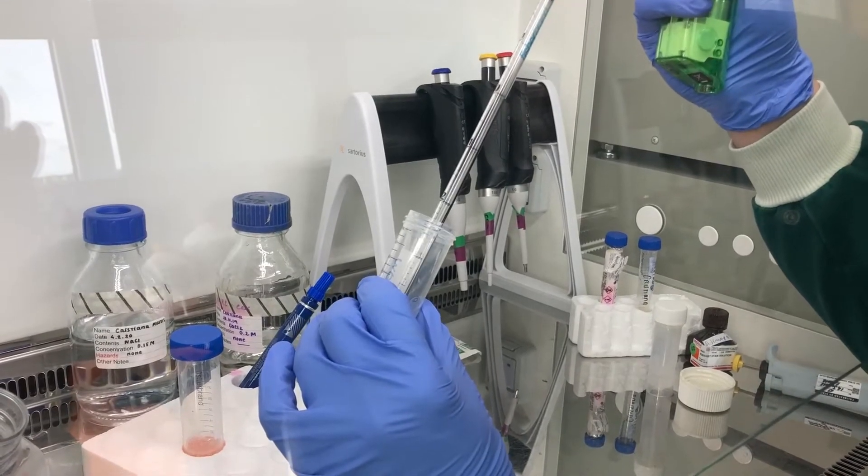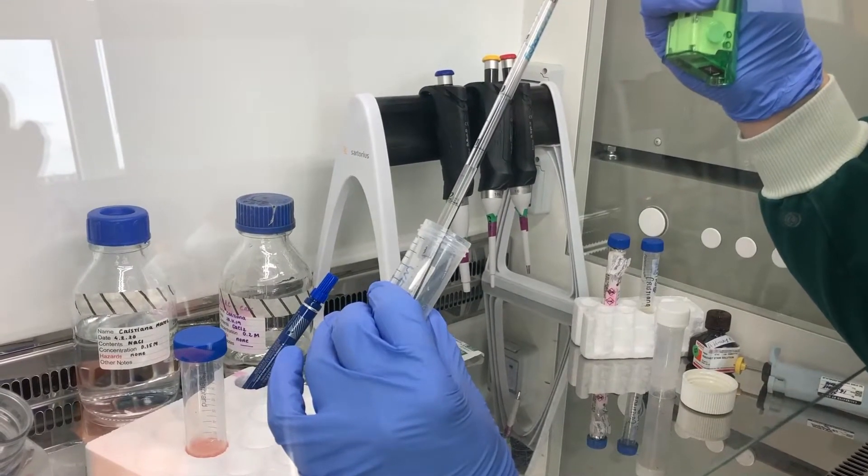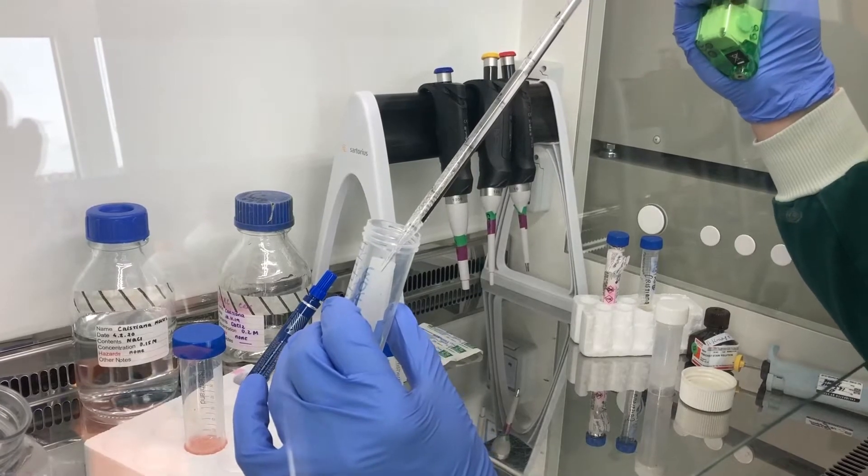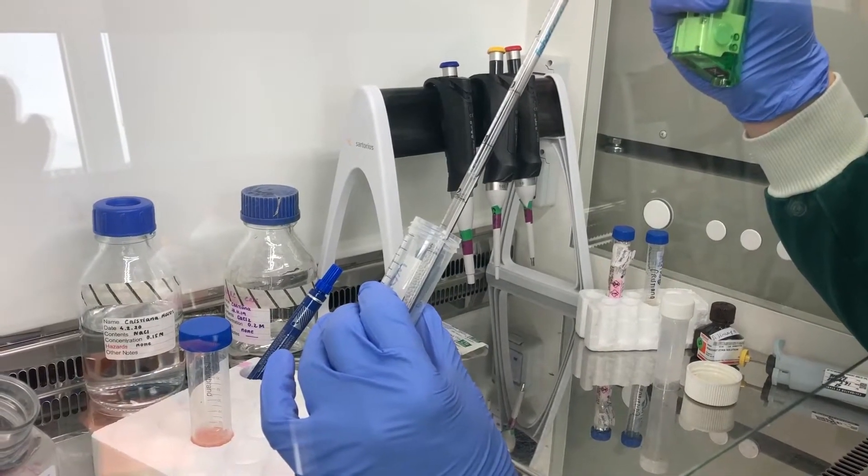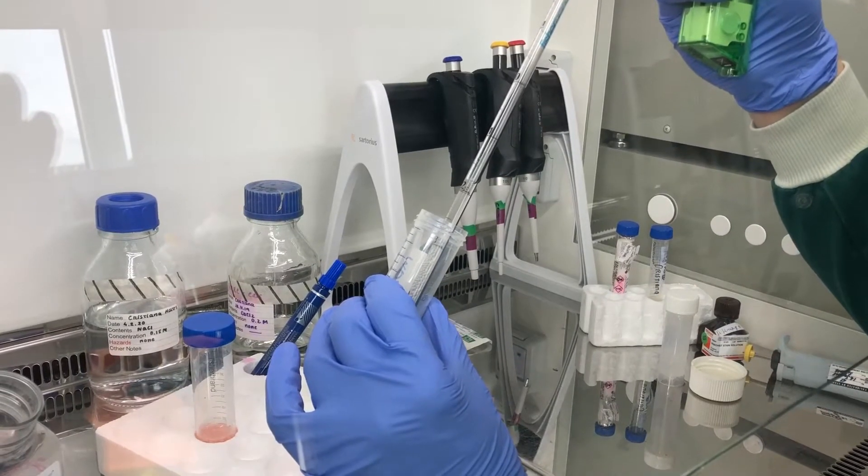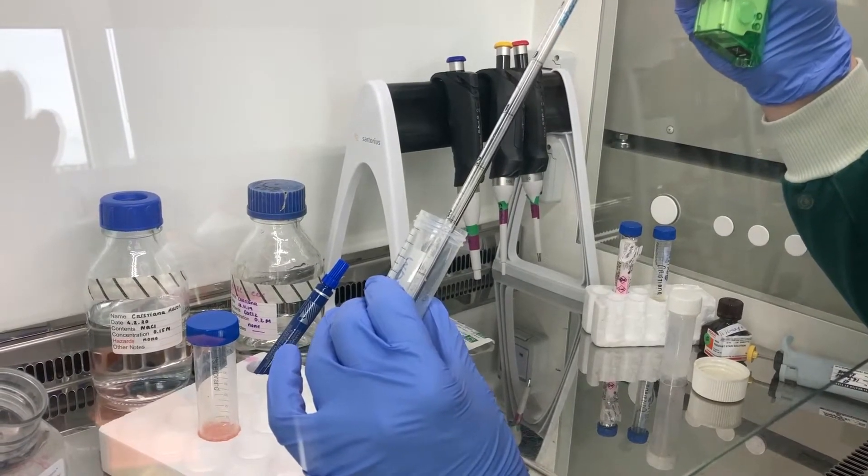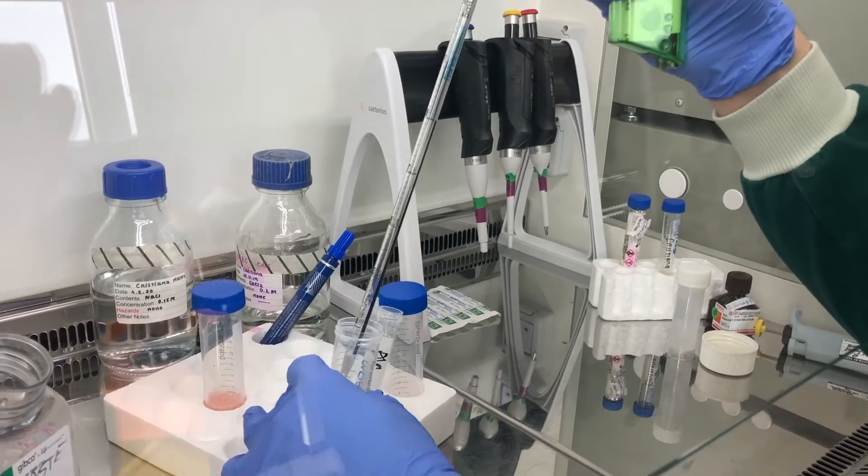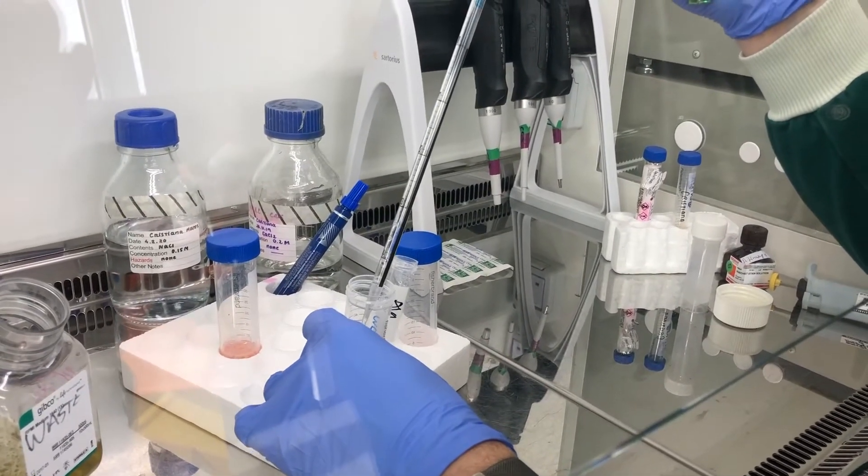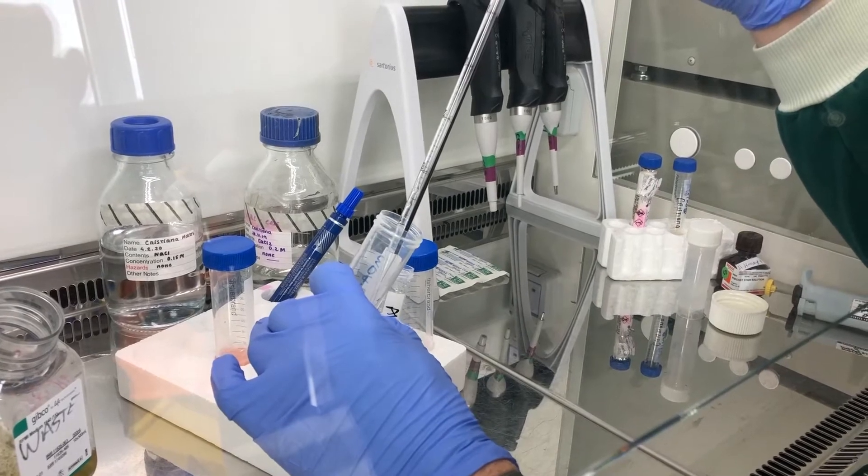So add it to the cells and you have to give those a really good mix. What you don't want to do is create air bubbles like I've just done, so try to avoid doing that because those air bubbles will mean that you get air bubbles within your alginate beads and they will float and that will cause you a problem. So you don't want to get air bubbles even though I've just put air bubbles into them.